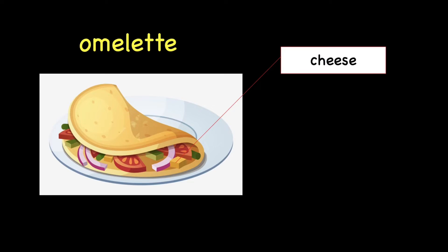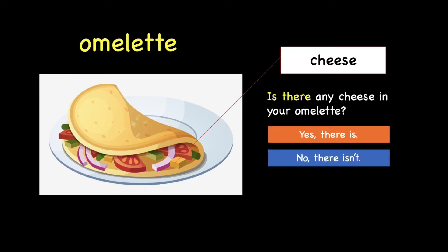The first ingredient in our omelette is cheese. Cheese is an uncountable noun, which means we cannot count cheese. So, if we want to ask if someone has cheese in their omelette, we say: "Is there any cheese in your omelette?" If there is, you can say: "Yes, there is." If there isn't, you say: "No, there isn't."